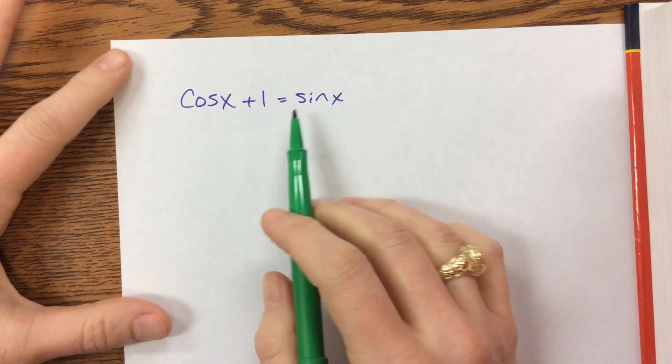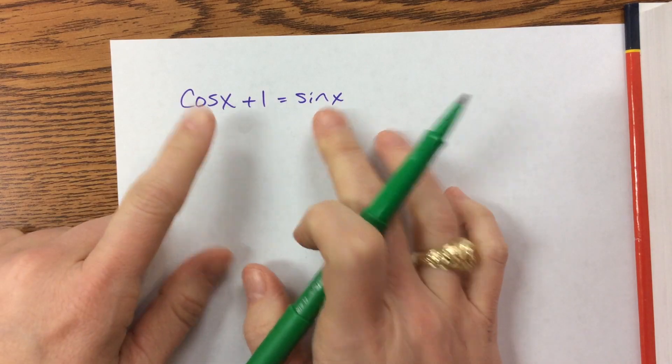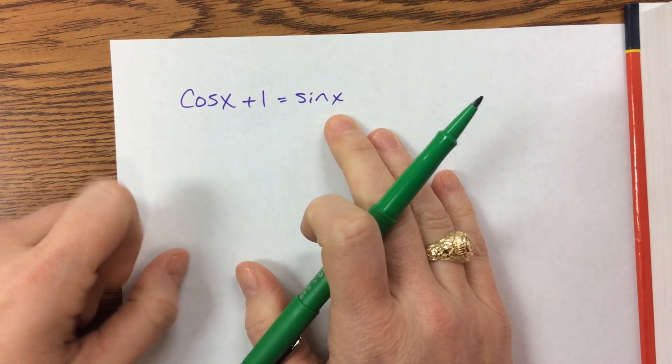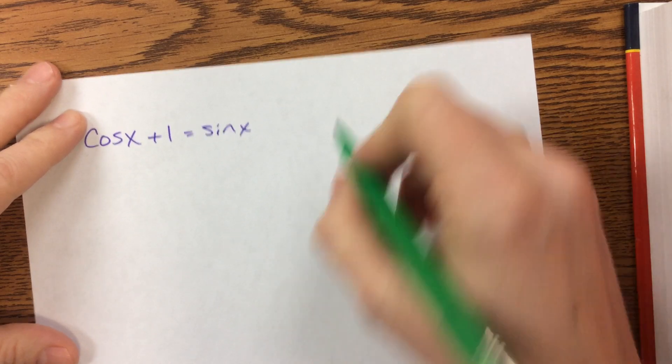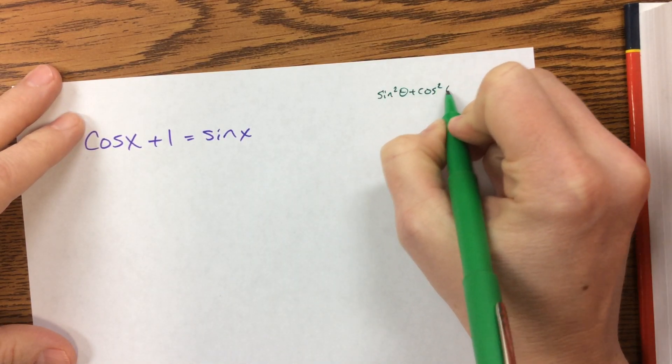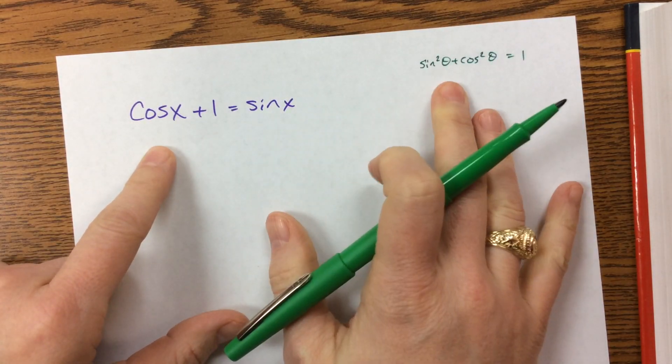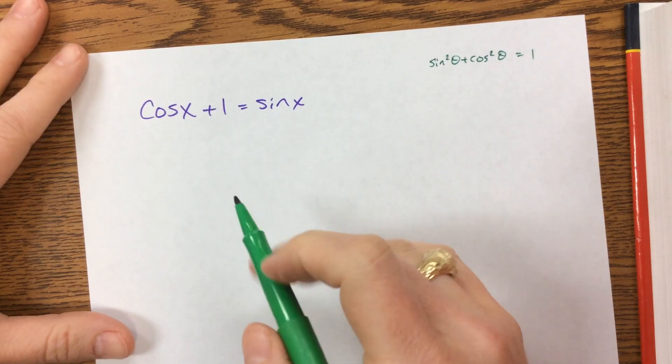So we see this problem that says cosine x plus 1 equals sine of x, and I know that I have a way to relate sine and cosine if they're squared. So you remember, I like to call it the big daddy, that sine squared plus cosine squared equals 1. So if I can somehow introduce some squares, then maybe we can get somewhere with this one.